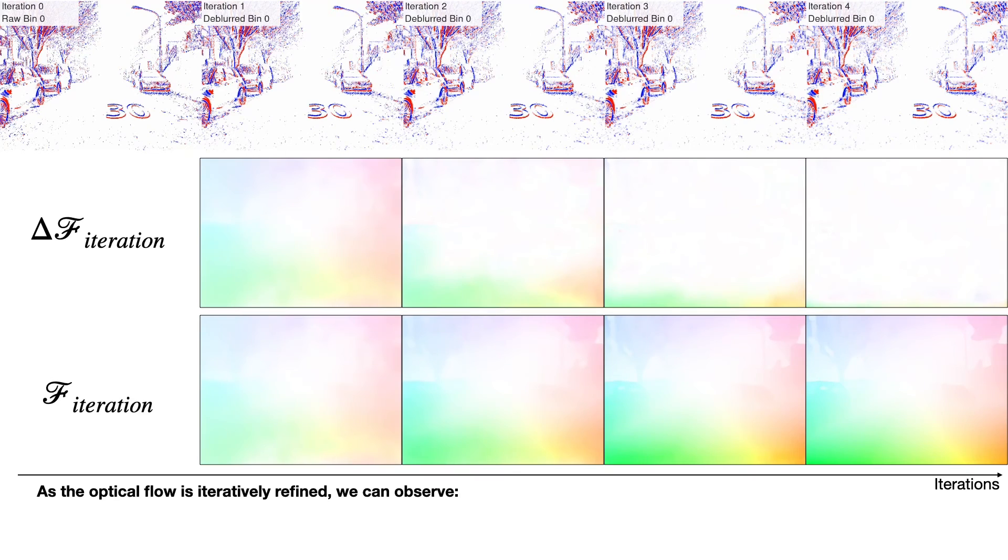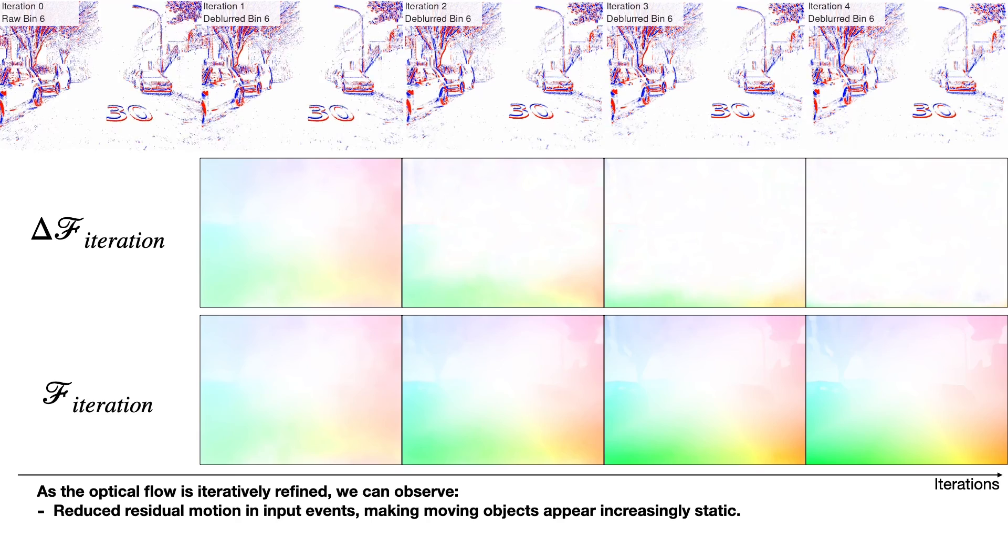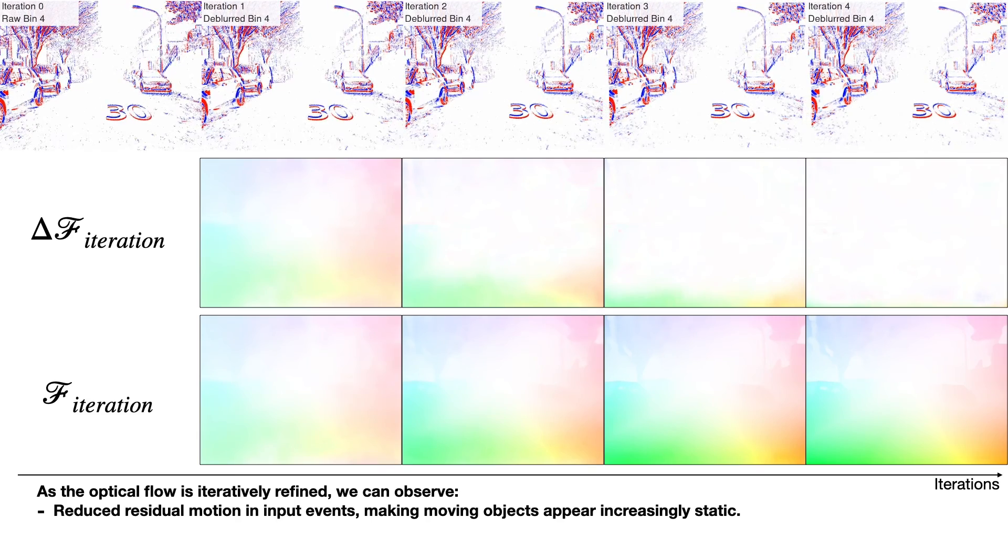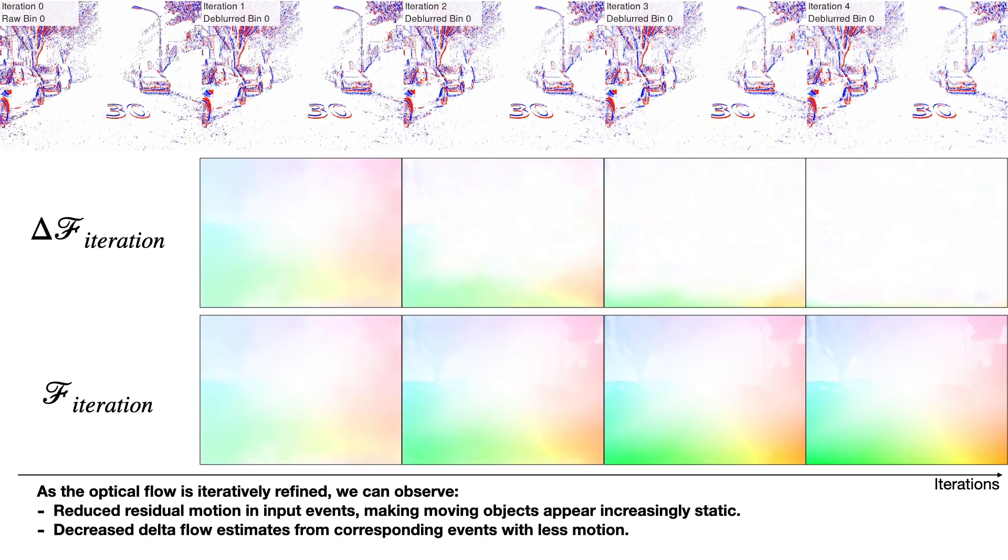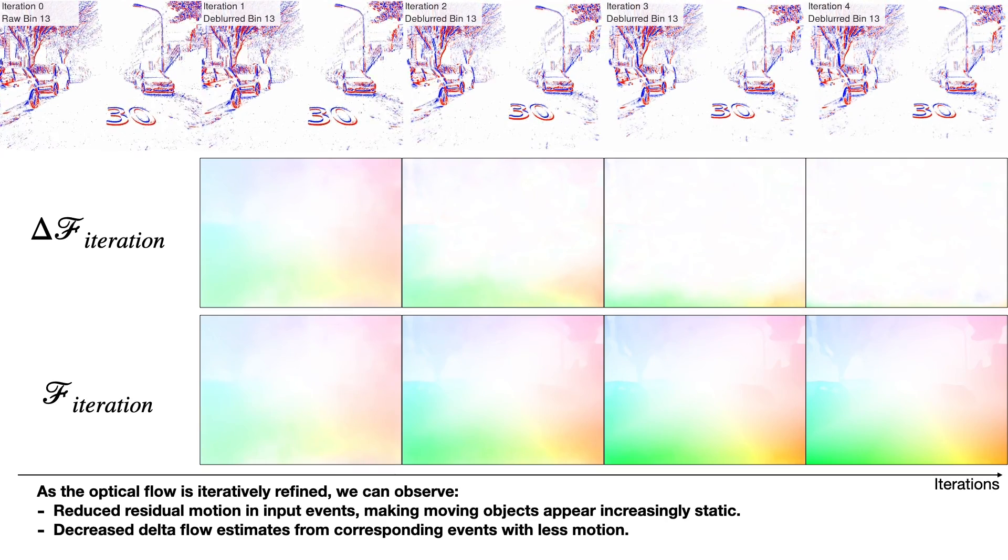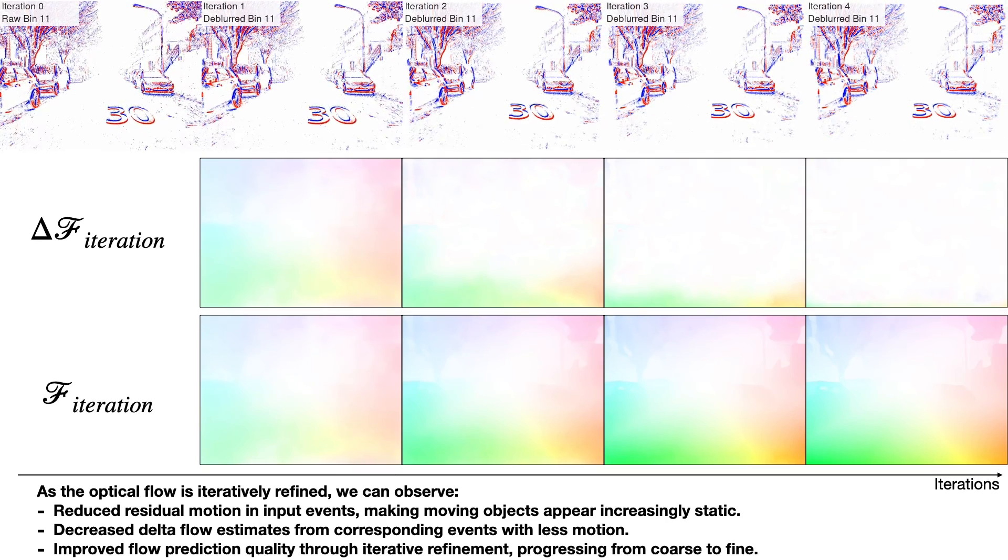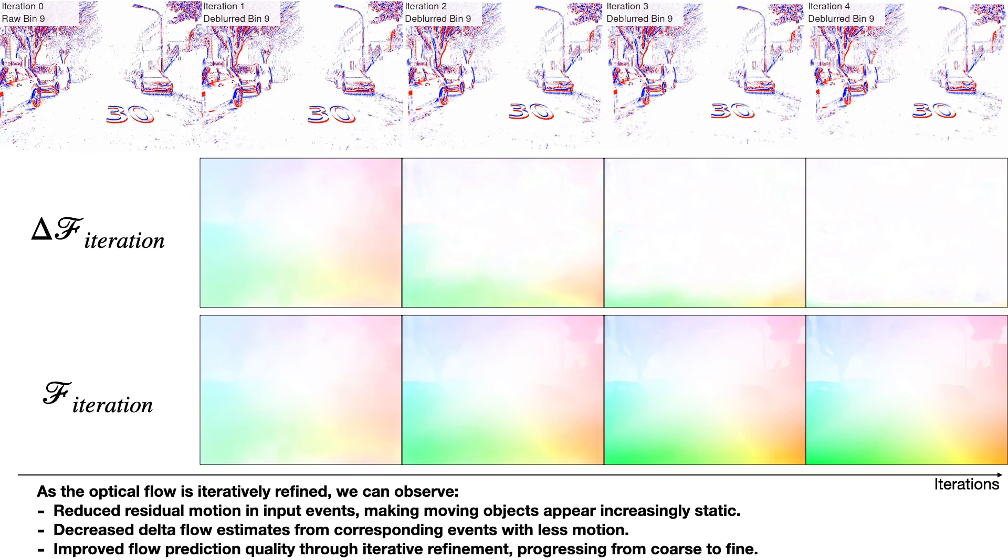As the optical flow is iteratively refined, we can observe reduced residual motion in the input events, rendering moving objects appear static, decreased delta flow representing less residual motion, and improved flow prediction quality progressing from coarse to fine.